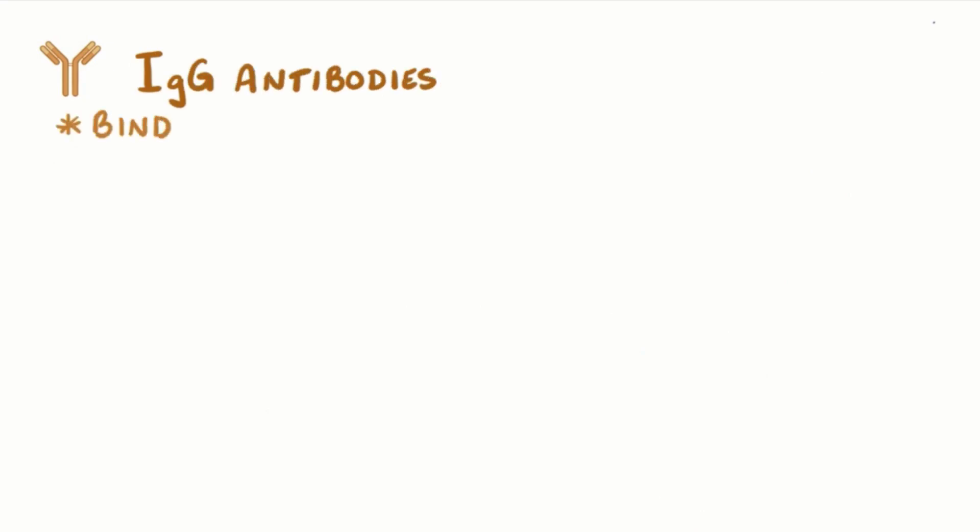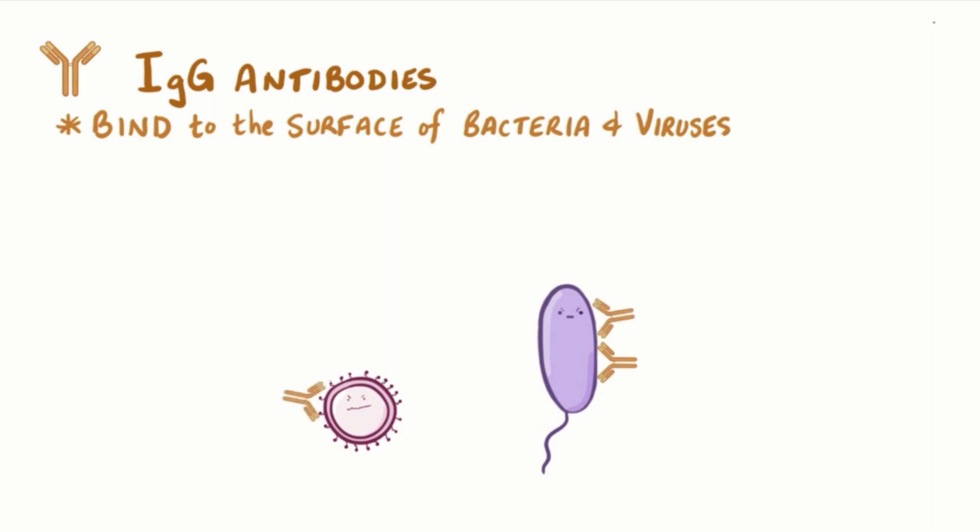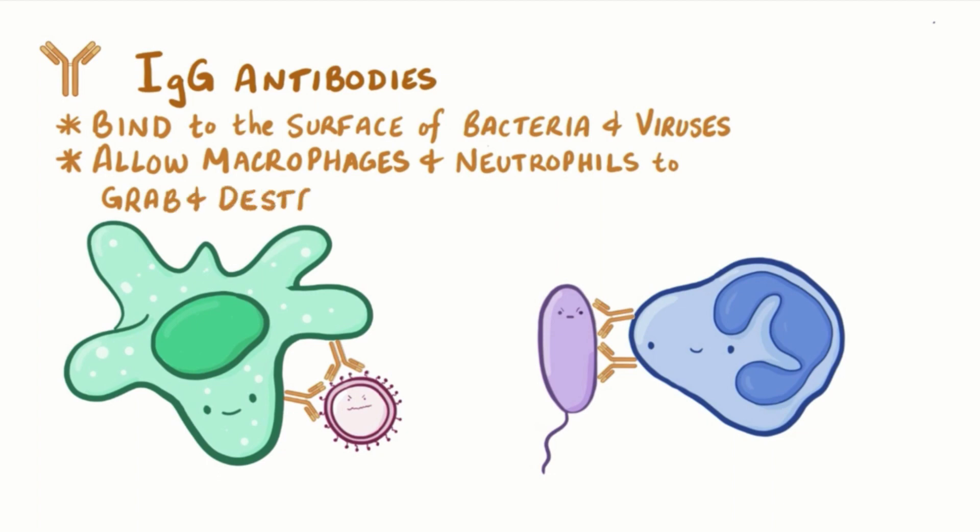IgG antibodies stick to the surface of bacteria and viruses, and that prevents them from adhering to and infecting cells. IgG also allows macrophages and neutrophils to grab and destroy the microbes.